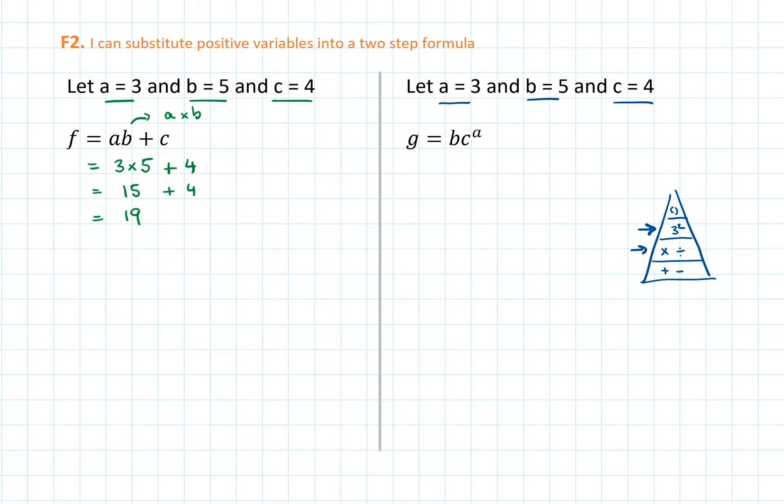That means that the power a only belongs to c, not to b. So if we start substituting, g equals 5, which is the value of b, multiplied by 4, which is the value of c, to the power 3, which is the value of a.